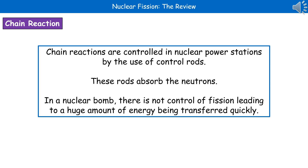If we compare our nuclear power station to a nuclear bomb, the key difference is there are no control rods in a nuclear bomb. So we have no control of that fission reaction, which leads to a huge amount of energy being transferred in a very short space of time, hence their destructive nature.